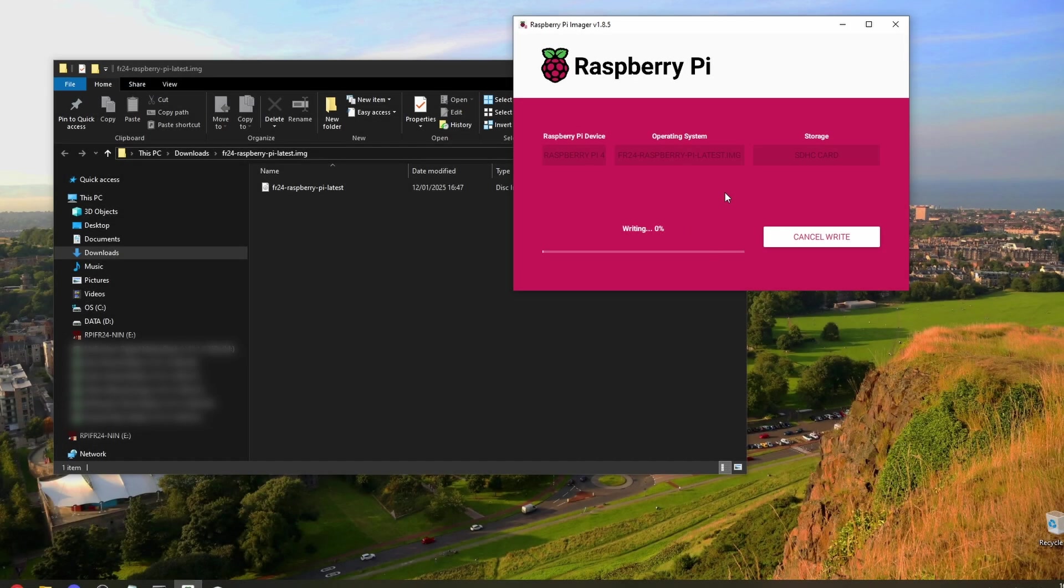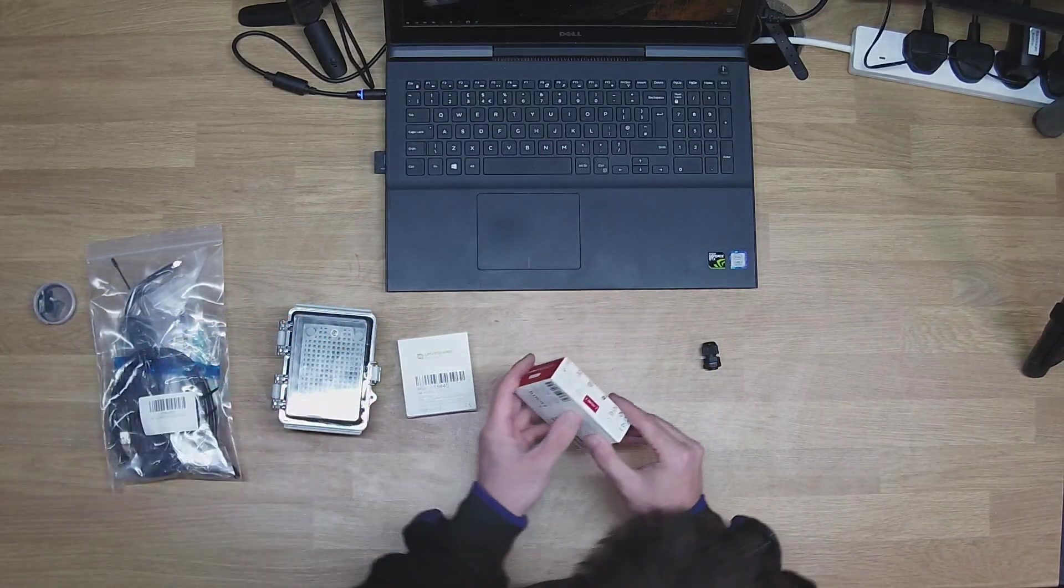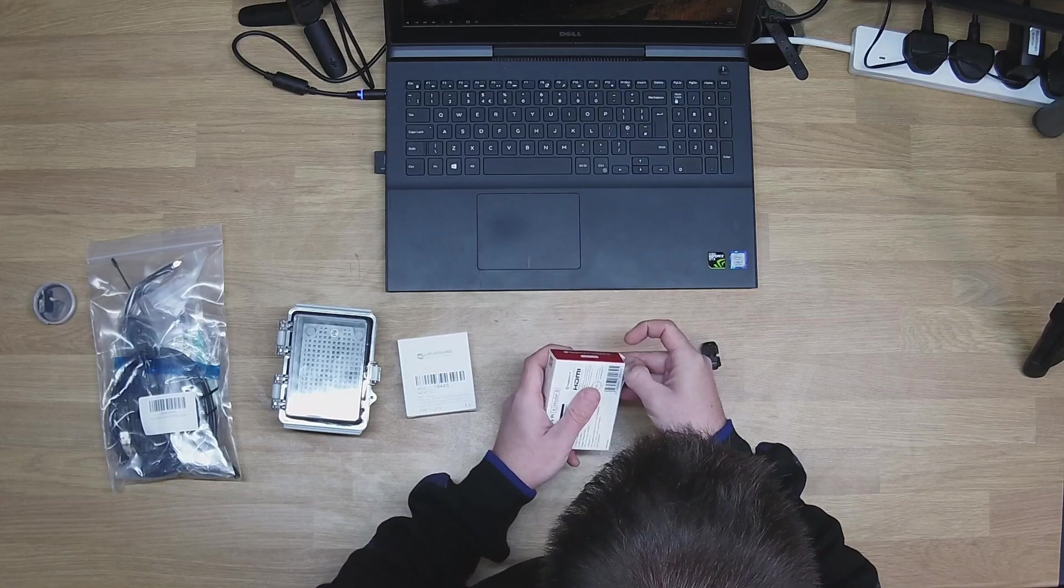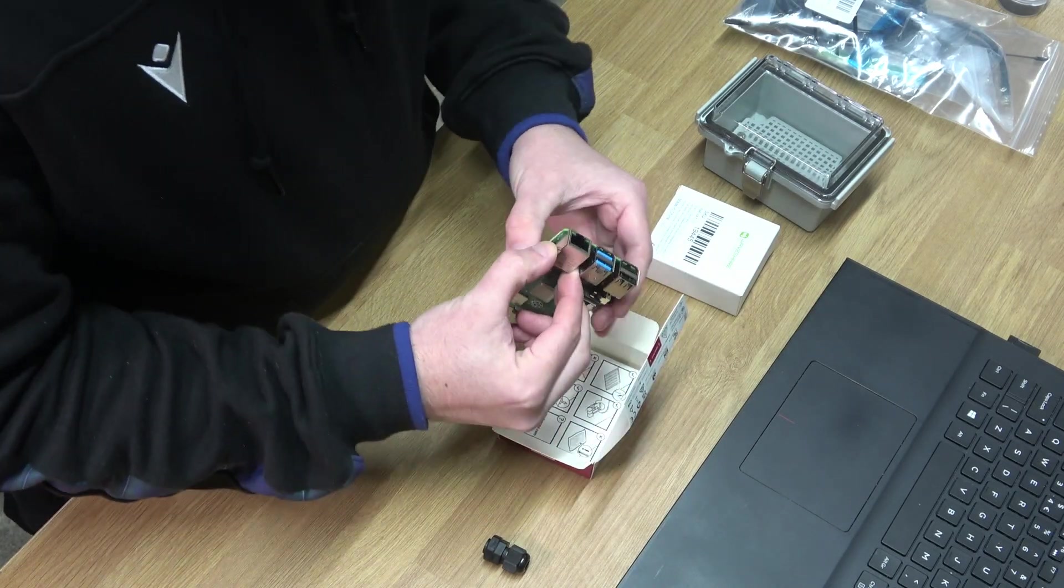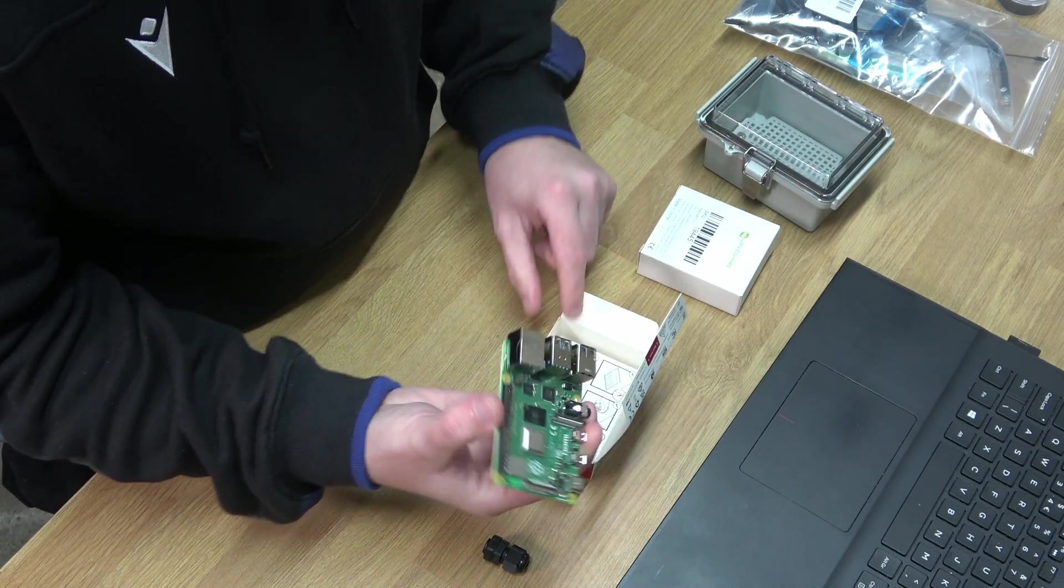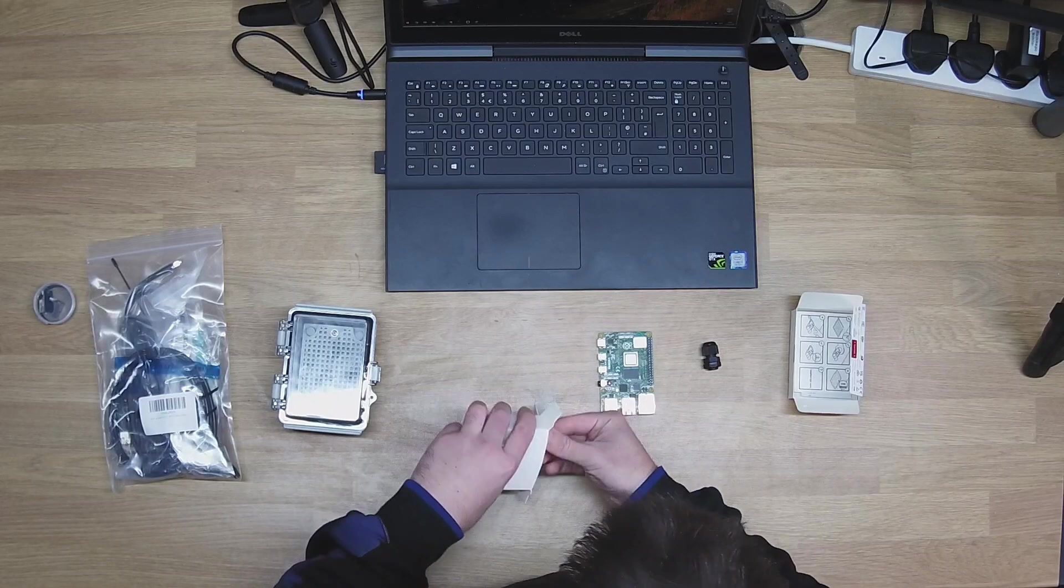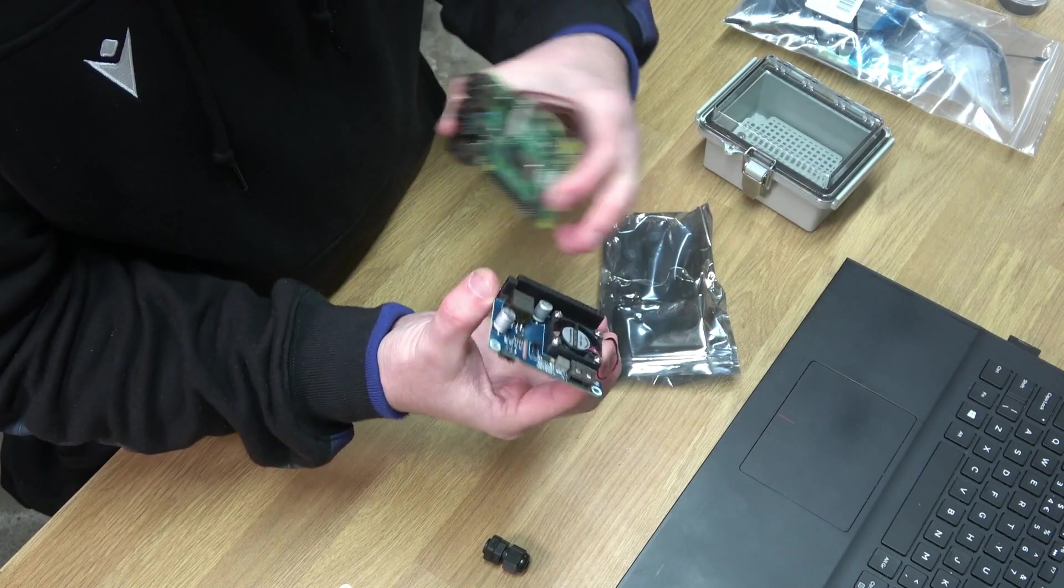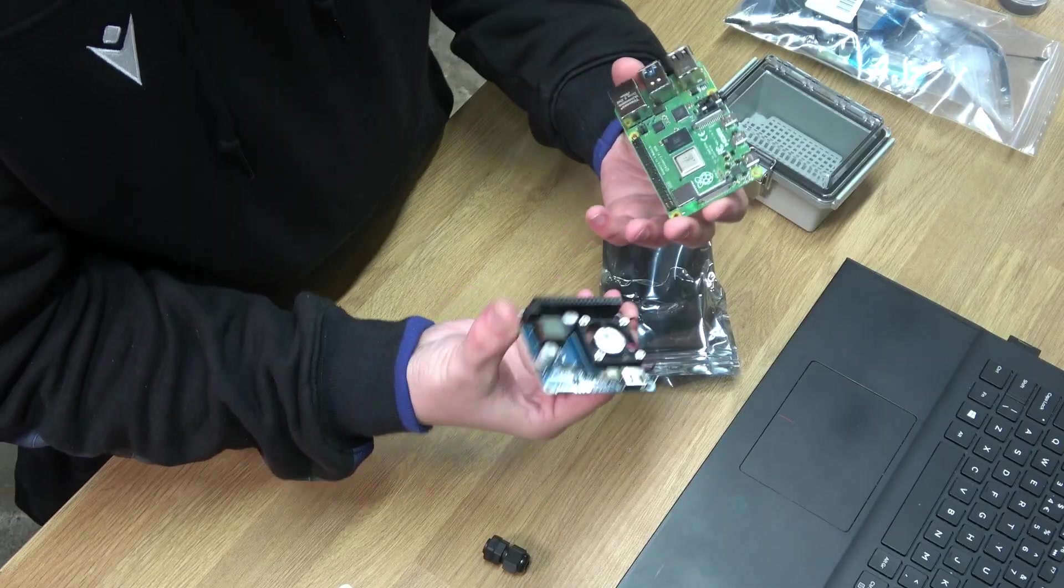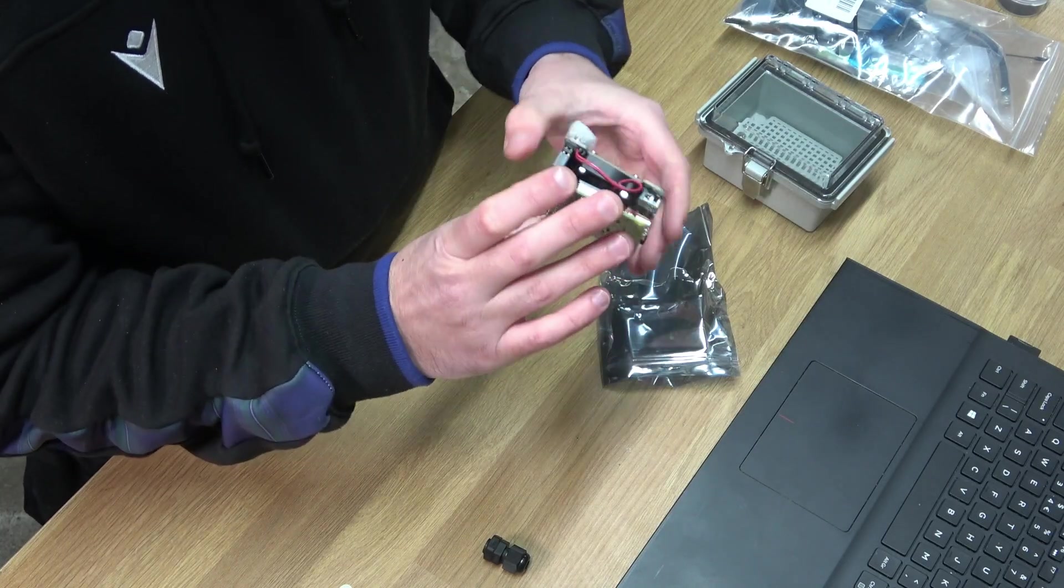Right let's get that writing and whilst we're doing that we will start unboxing stuff. Okay so we have the Raspberry Pi 4 as I mentioned, again 1 gig. And we also have the PoE injector and the hat to go on the top. So we'll just stick this on top of here, we've got the PoE hat. So we'll get that on and we'll get the posts and things put on as well, get that built up.